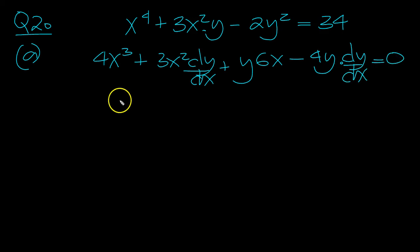Equals 0. So then dy/dx, bring it out here, times by 3x squared minus the 4y is equal to, move this over there, and move this over there, minus 4x cubed minus 6xy.